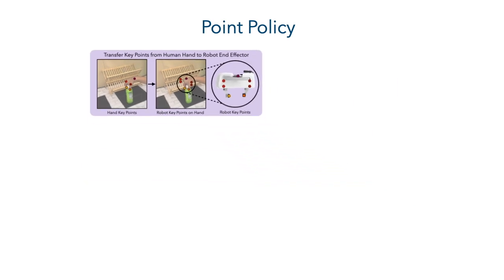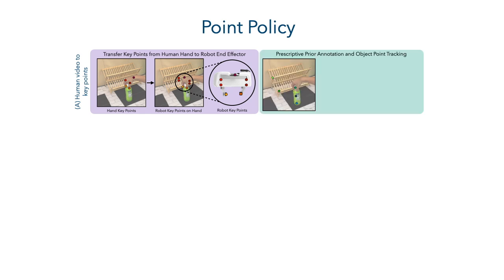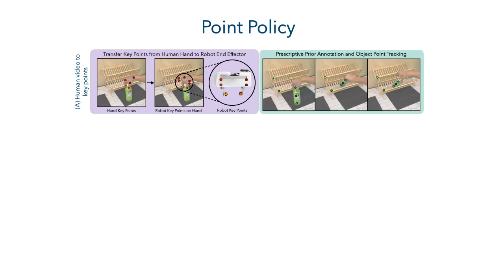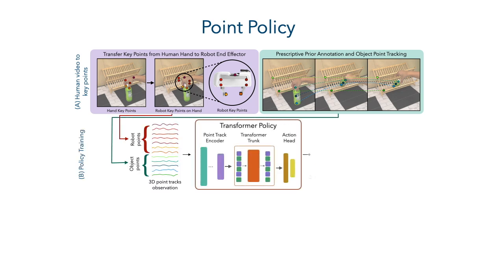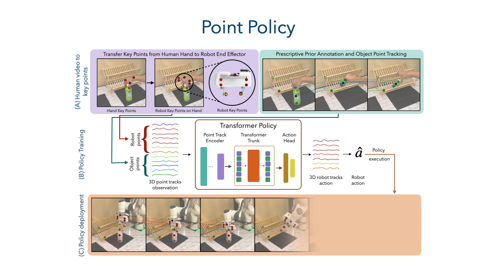The object information in the scene is captured through object key points obtained via single-frame human annotation. The robot and object key points are then fed into a transformer policy to predict robot point tracks, which are then converted to robot actions. These actions are then executed on the robot to perform the task.